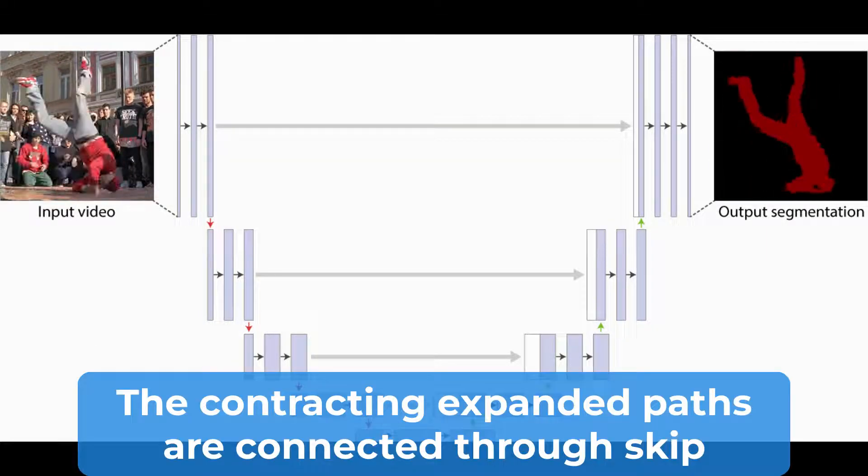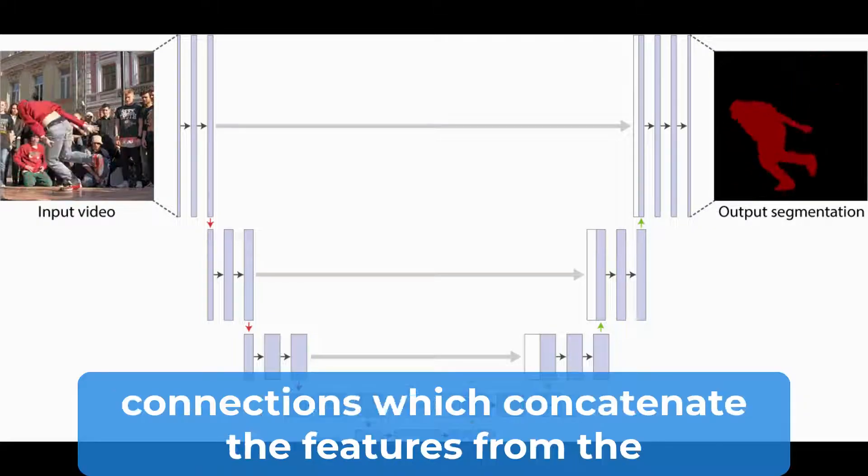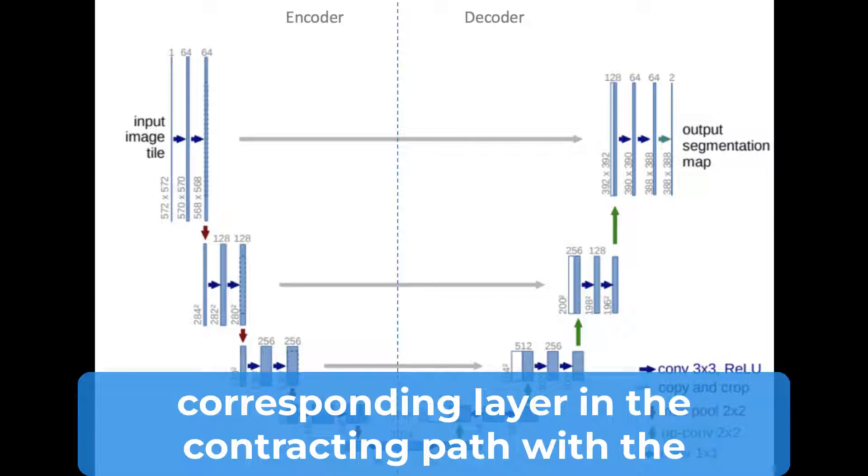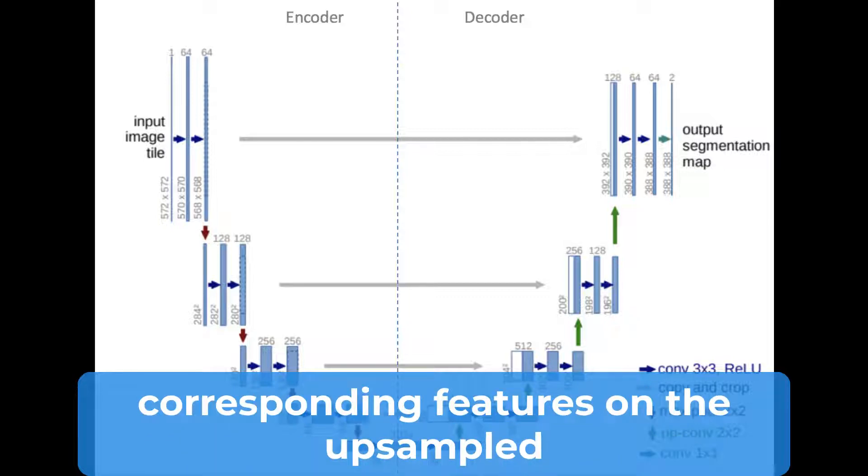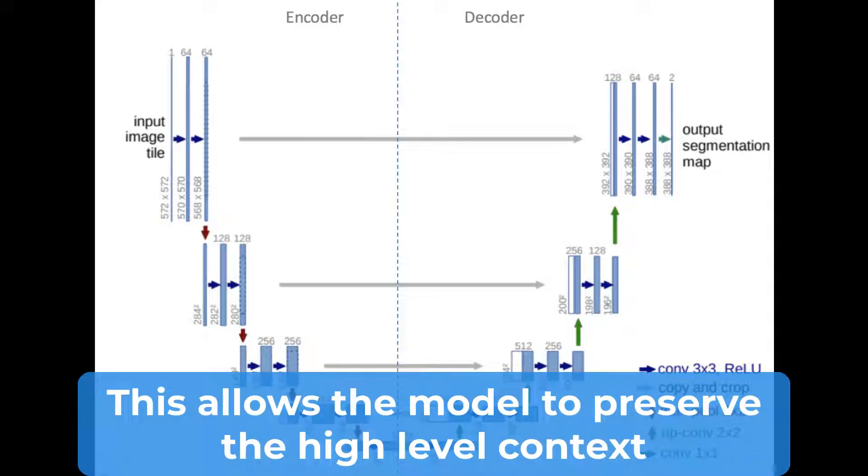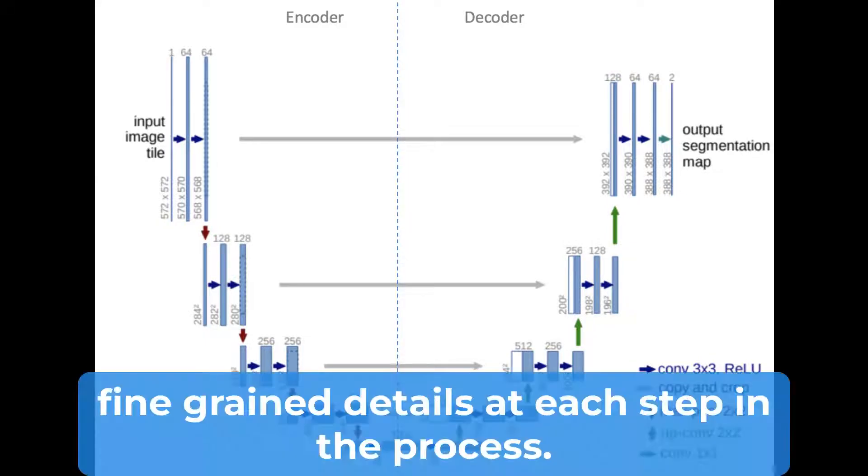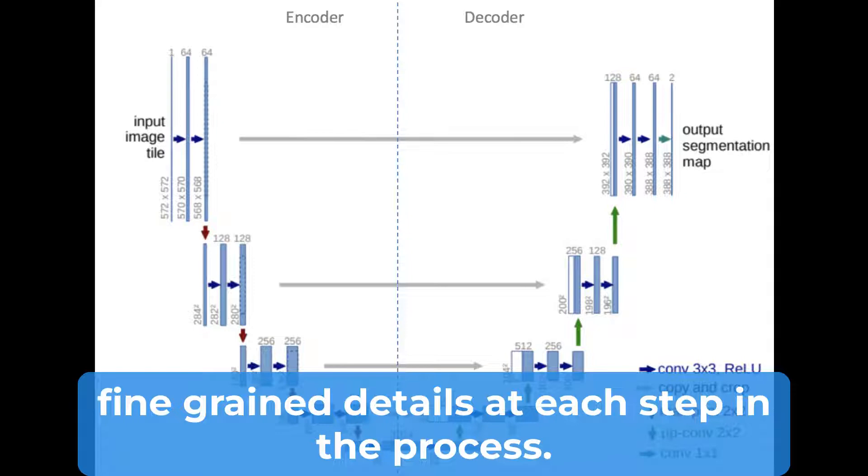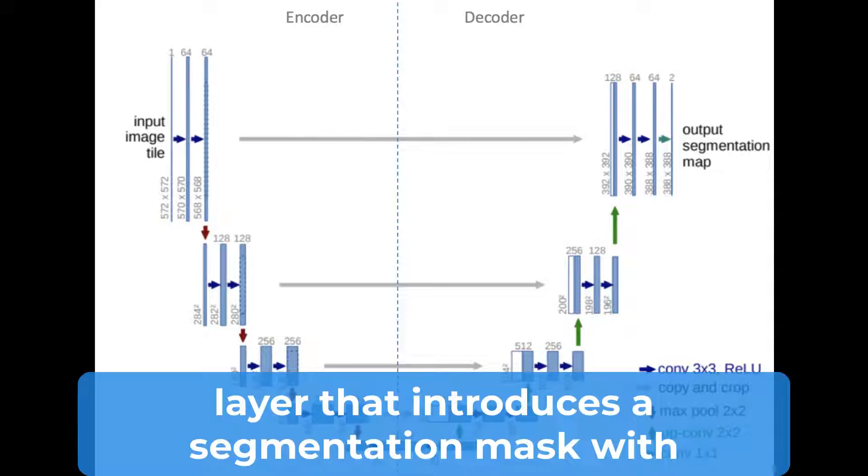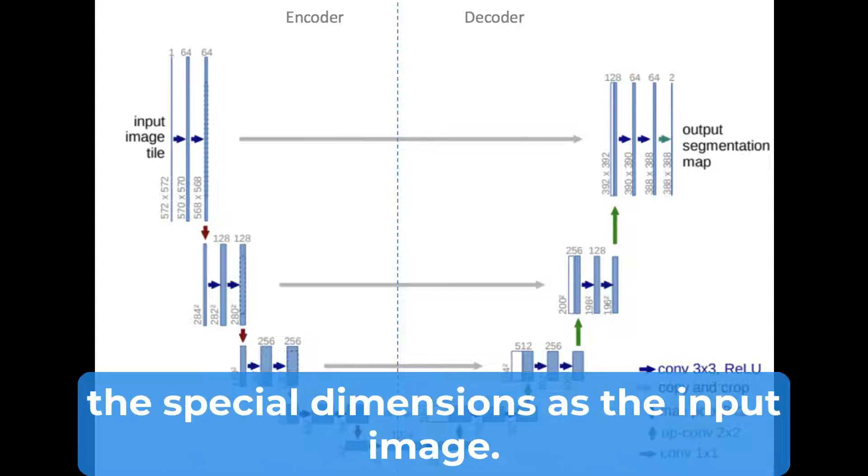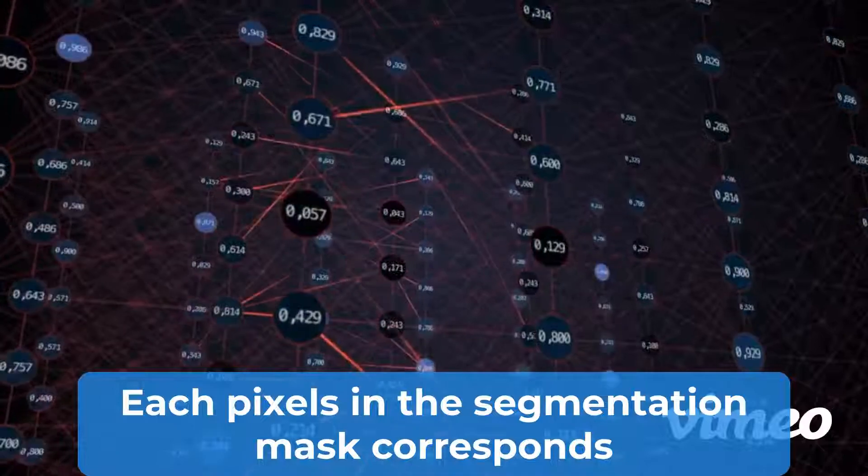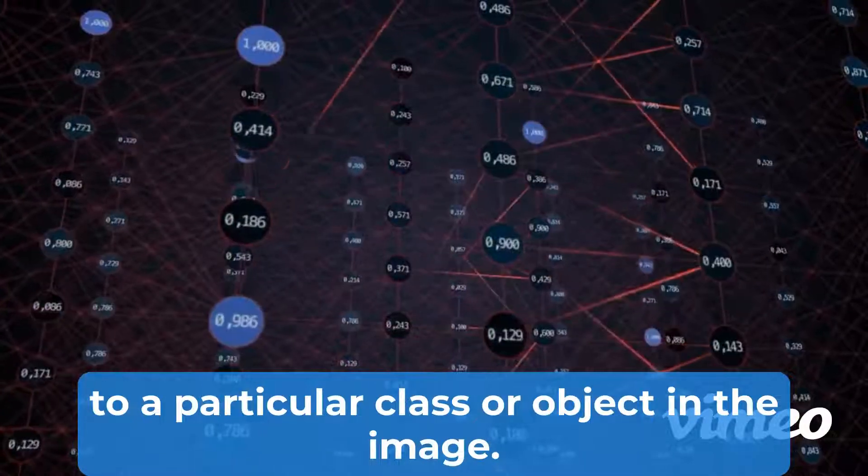The contracting and expanding paths are connected through skip connections, which concatenate the features from the corresponding layer in the contracting path with the corresponding features from the upsampling layers in the expanding path. This allows the model to preserve the high-level context and fine-grained details at each step in the process. The final layer of the UNET model is a 1x1 convolution layer that produces a segmentation mask with the same spatial dimensions as the input image. Each pixel in the segmentation mask corresponds to a particular class or object in the image.